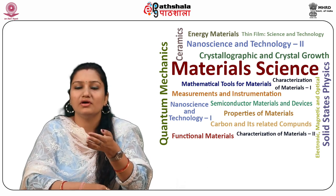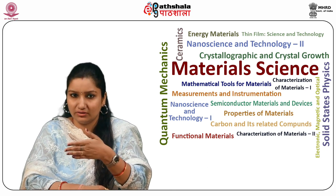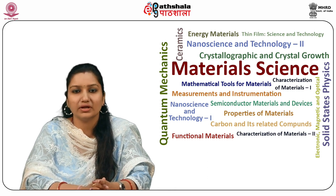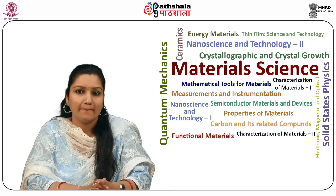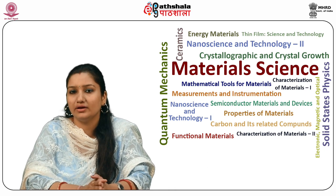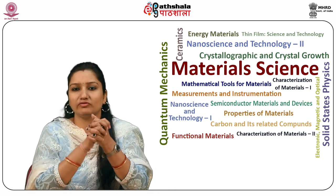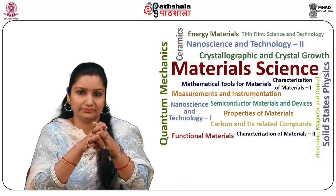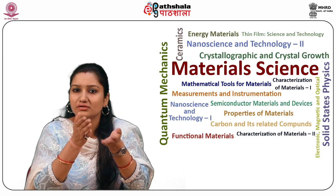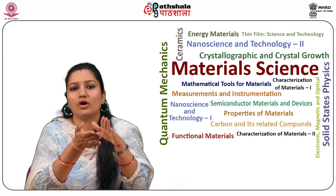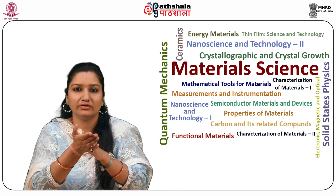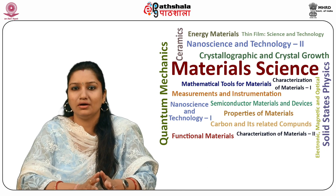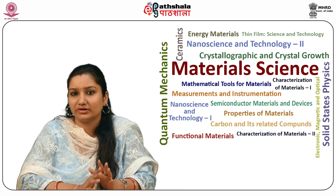Atoms from a solid target source are ejected or sputtered via a process of momentum exchange inside the plasma by the action of high-energy ions, usually originating from some inert gas ambient like argon. The ejected particles are then deposited or condensed on the surface of the substrate to produce a thin film. This is how sputtering is a vacuum coating technique.